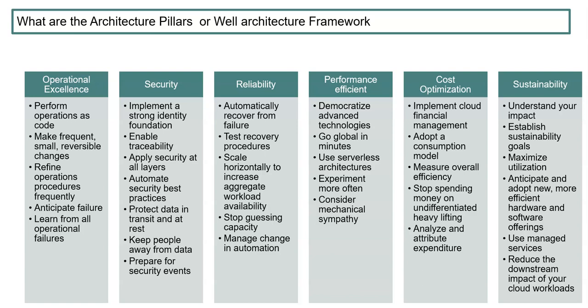Here six pillars are listed: operational excellence, security, reliability, performance efficiency, cost optimization, and sustainability. So if you want to design any architecture on the cloud or outside the cloud, these are the six parameters you usually need to consider.